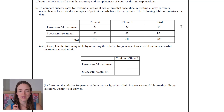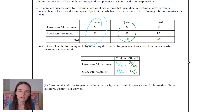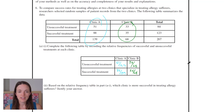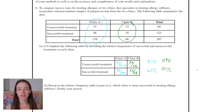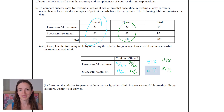Let's see what part two is asking us. Based on the relative frequency table in part A1, which clinic is more successful? Okay, so this sounds like we're doing: of clinic A and of clinic B. So of clinic A, there are 139 patients. 51 were unsuccessful in their allergy treatment, so 51 out of 139. Similar over here for clinic B. I should change those into percents. So it looks like clinic A is more successful — they have a higher percentage of successful treatments.